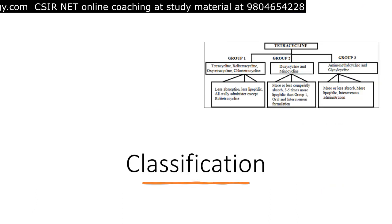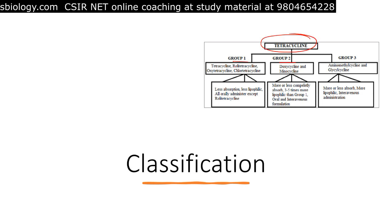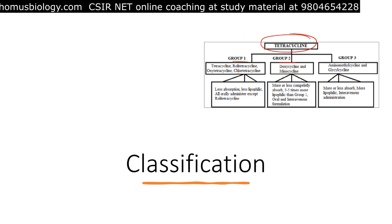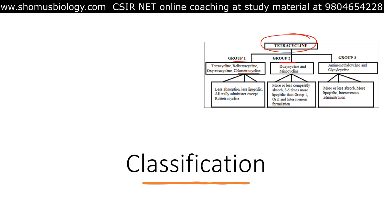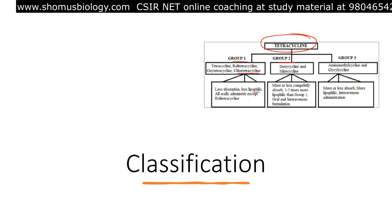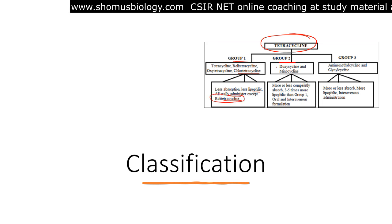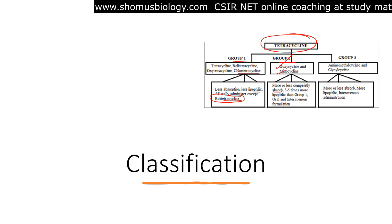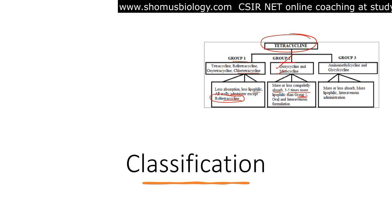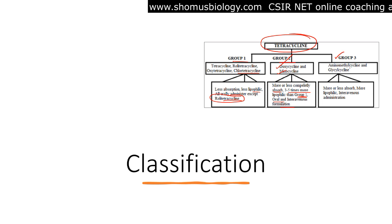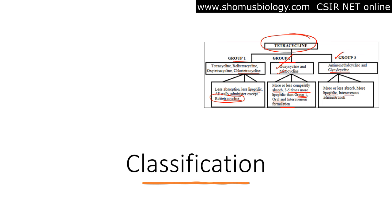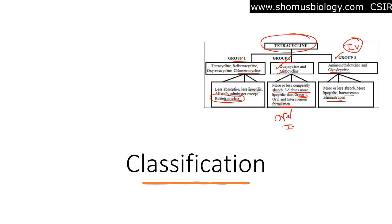Tetracyclines can be classified into Group 1, 2, and 3. Group 1 includes tetracycline, oxytetracycline, and chlorotetracycline — less lipophilic and orally administered. Group 2 includes doxycycline and minocycline — more or less completely absorbed, 3 to 5 times more lipophilic than Group 1, used as oral as well as IV formulation. Group 3 includes aminomethylcycline and glycycline — more lipophilic and used for intravenous administration only.